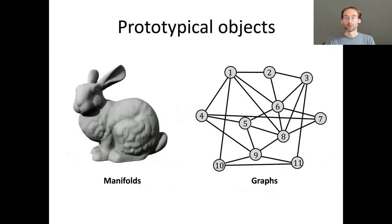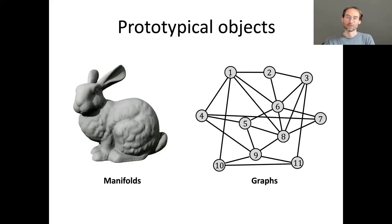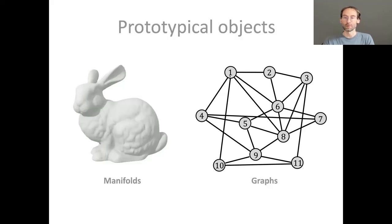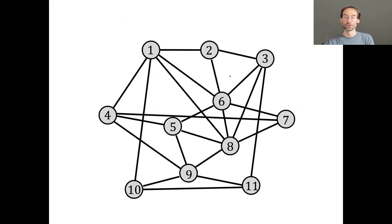The prototypical objects I'd like to consider today are graphs and manifolds. From the standpoint of a classical mathematician, there is nothing less similar: people studying them sit in different departments, go to different conferences, and perhaps quietly dislike each other. But I hope to convince you that from some standpoints these objects have certain similarities. I will primarily focus on graphs today and show at the end how these ideas generalize to what we call the 4G of geometric deep learning.